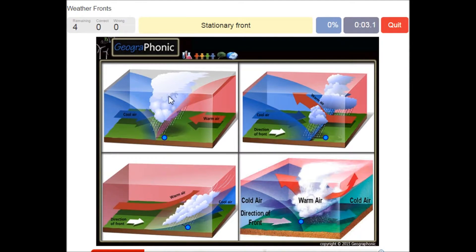The first one is this one. This is a stationary front and it's recognized by warm air and cool air coming in both at the same pace and this is a stationary area which causes rain to fall.